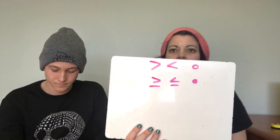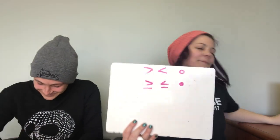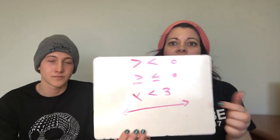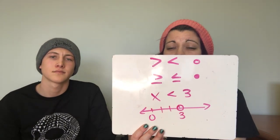First, let's review how to graph inequalities. A greater than or less than sign has an open circle. A greater than or equal to or less than or equal to has a closed circle. For example, if I have x is less than 3, we put an open circle on 3. If it's a less than sign, we shade to the left. If it's a greater than sign, we shade to the right.